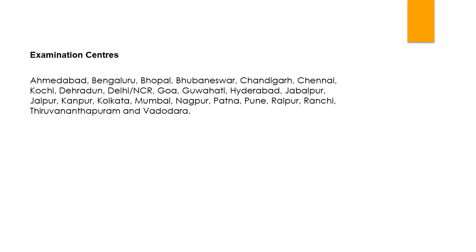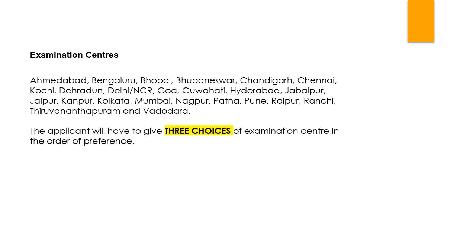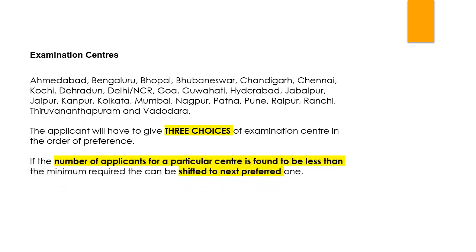Examination centers are located across the country, covering major cities like Ahmedabad, Bangalore, Bhopal, Bhubaneswar, Chandigarh, Chennai, and more. You are given three choices of examination center in order of preference. If the number of applicants for a particular center is less than the minimum required, the center can be shifted. For example, if your first choice is Jaipur, second is Chandigarh, and third is Delhi NCR, and Jaipur has too few candidates, you'll be moved to Chandigarh, and so on. Choose centers within your region.